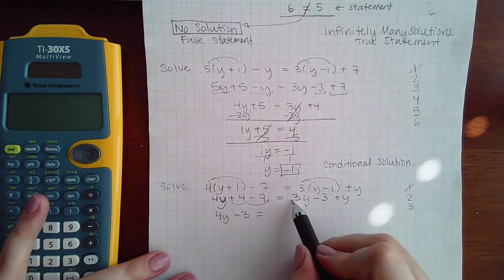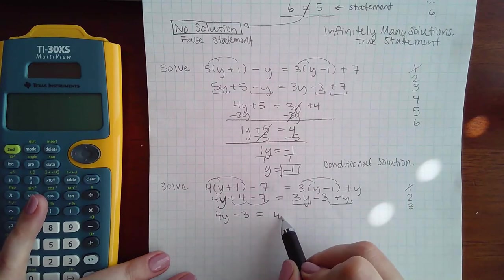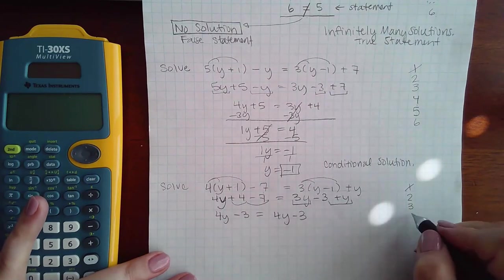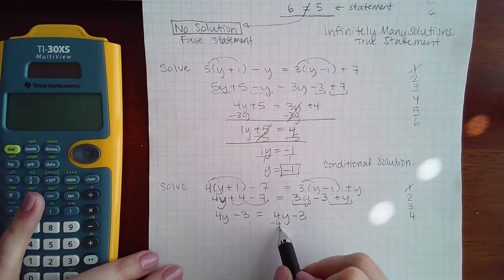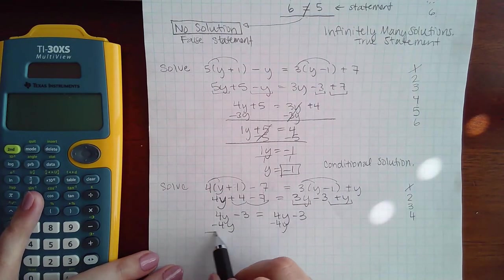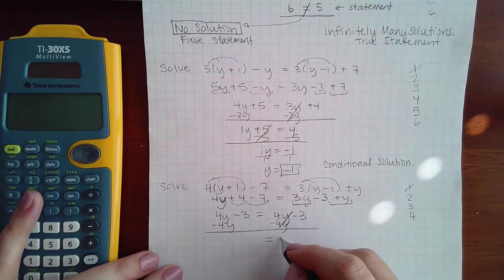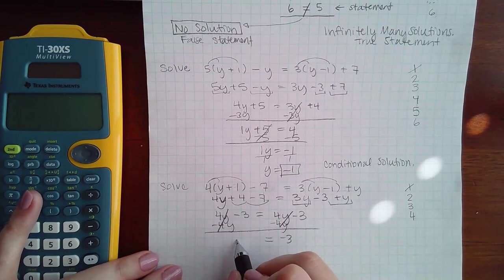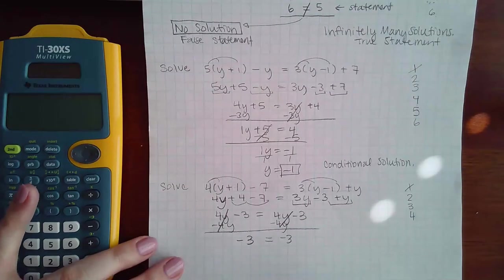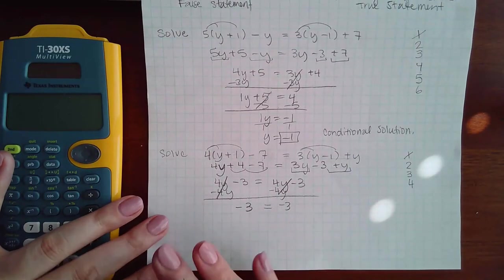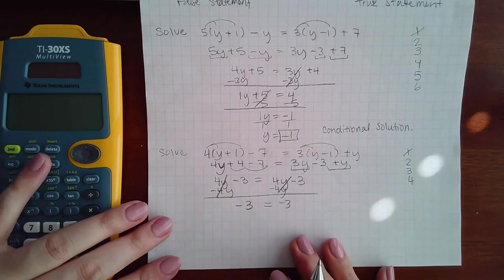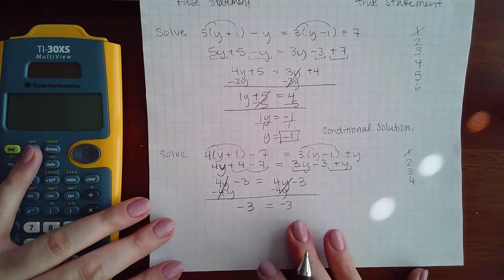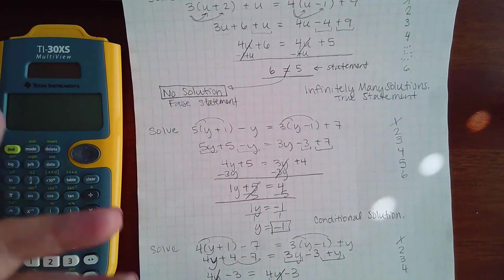When we go to step four to move the variables over, we have to minus 4y on both sides. That happens to wipe out the variables on the right, but it also happens to wipe out the variables on the left. So there's no reason to continue when that happens. That's the part where you need to start analyzing what you have.